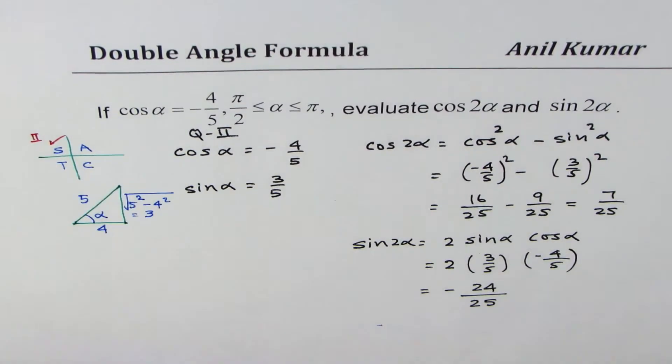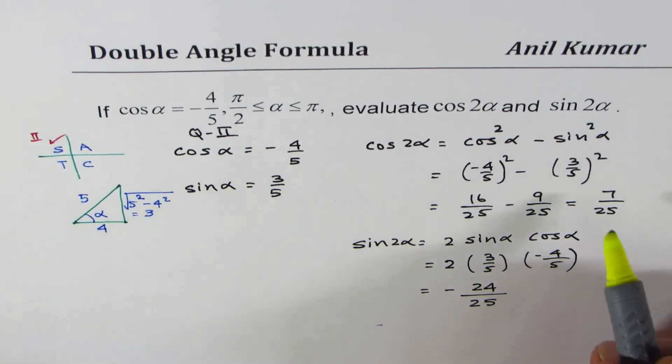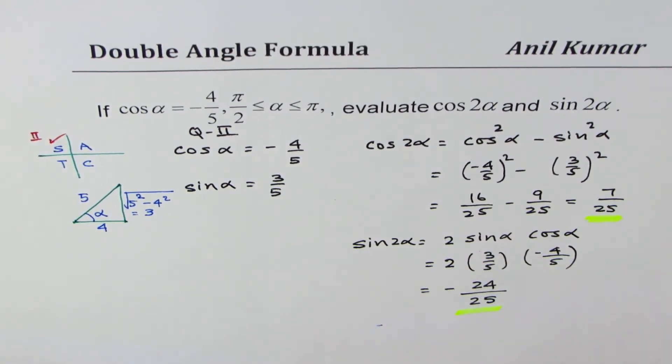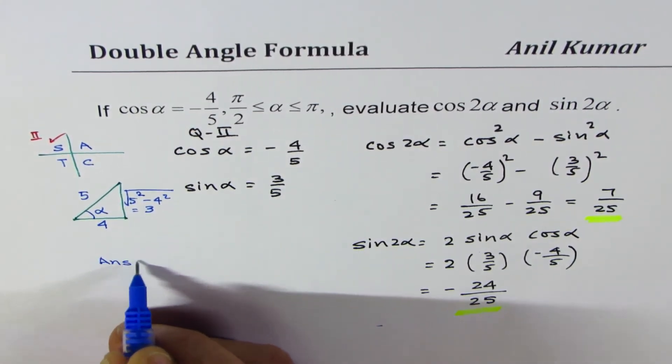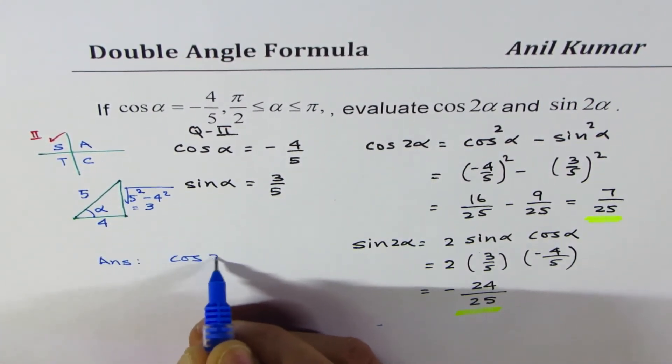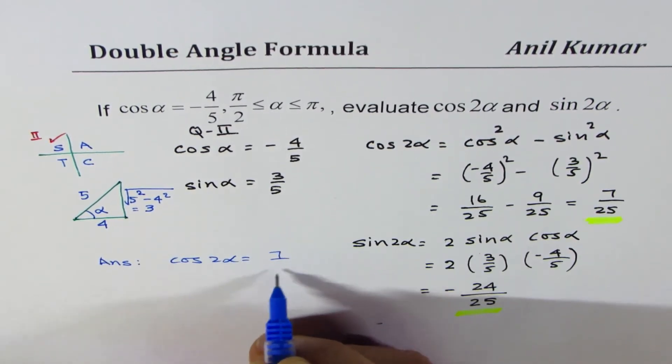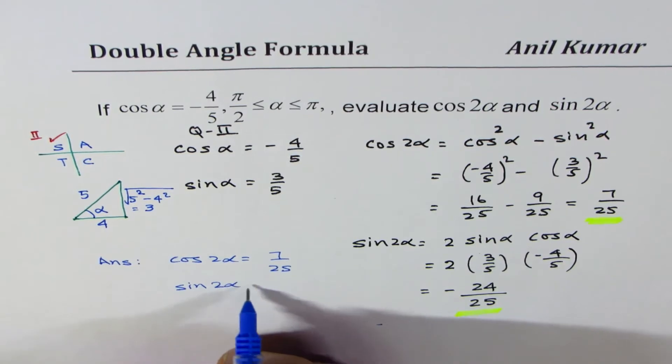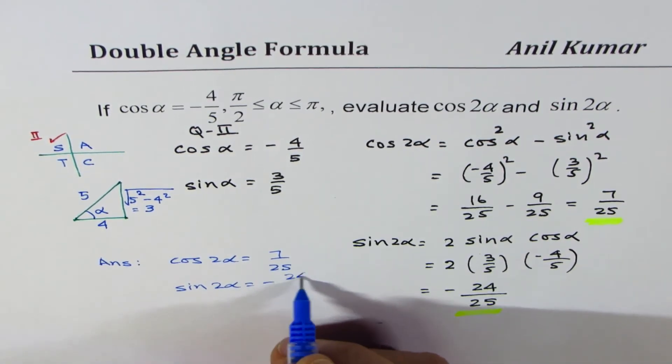So we get both the answers, which are, for cos 2 alpha, it is 7 over 25, and for sine 2 alpha, we get minus 24 over 25. So our answers are, cos 2 alpha equals to 7 over 25, and sine 2 alpha is negative value, 24 over 25.